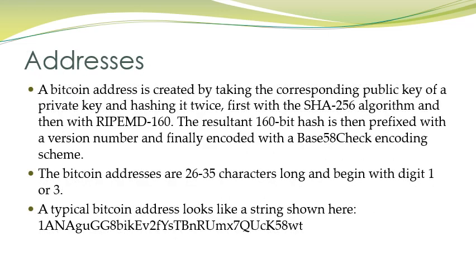A Bitcoin address is created by taking the corresponding public key of a private key, then a hash function is used twice. First, the SHA-256 hash algorithm is applied, and then the RIPEMD-160 algorithm is used, resulting in a 160-bit hash. This hash is prefixed by the version number and finally encoded with the Base-58 Check encoding scheme. Bitcoin addresses are 26 to 35 characters long and begin with the digit 1 or 3.